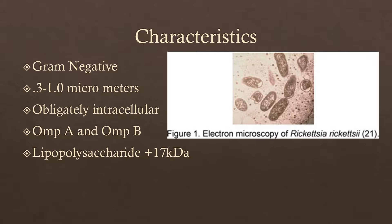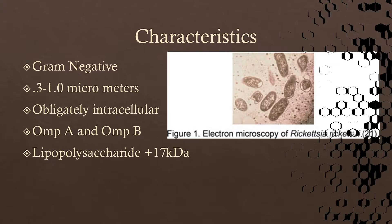Some characteristics of Rickettsia rickettsii are that it is gram-negative and coccobacillus, as seen in the image on the right. It is very small, about 0.3 to 1 micrometers in size, and obligately intracellular, so it cannot survive very long outside of a cell. It has two very important outer membrane proteins: OmpA, which helps with attachment to the host cell, and OmpB, which forms a geometrical S-layer surrounding the cell to help evade phagocytes. It also has a lipopolysaccharide plus a 17 kDa lipoprotein that helps stabilize the bacterium's structure, can help against chemical attacks, and triggers a high immune response because it is recognized by antibodies.